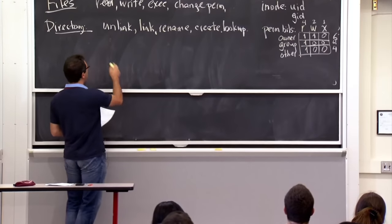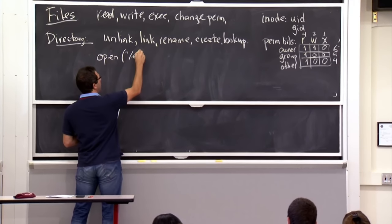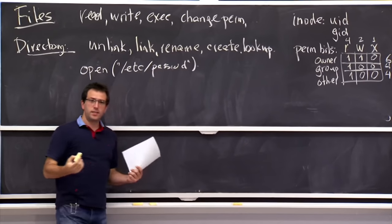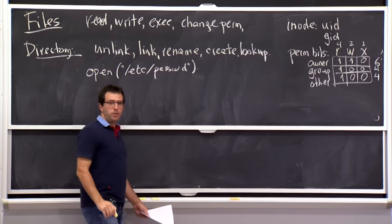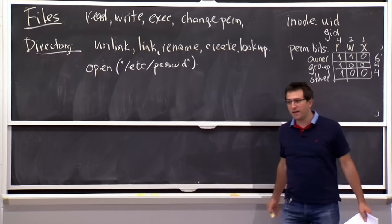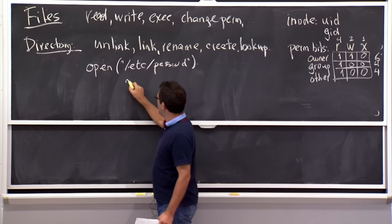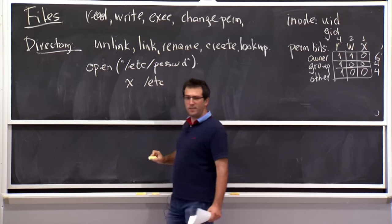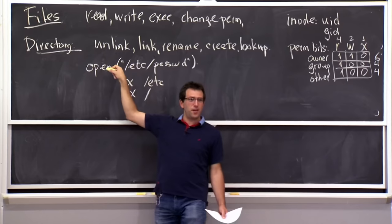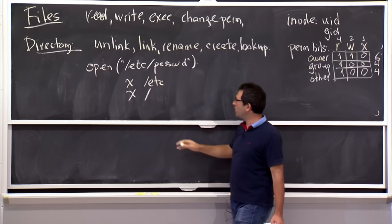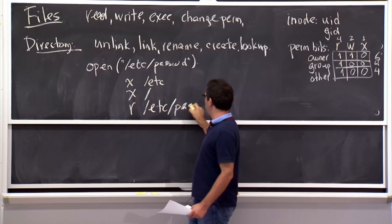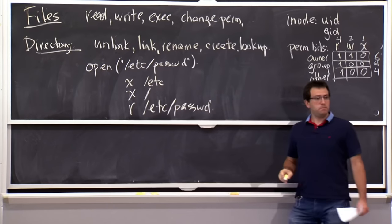For example, when you call open('/etc/passwd'), the kernel checks: execute permission on slash (to look up 'etc'), execute permission on /etc (to look up 'passwd'), and read permission on /etc/passwd itself. As a small puzzle: if MIT has a group for all 6858 students and another for all TAs, but no group for 6858 TAs specifically, could you create a file accessible only to 6858 TAs? There's only one GID per file, which limits things.